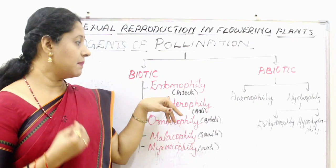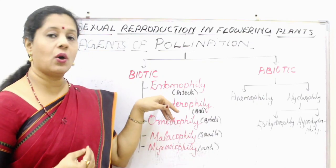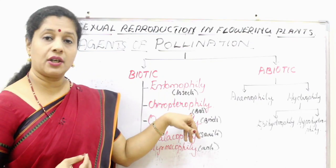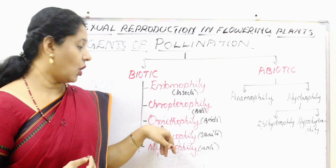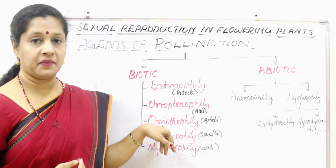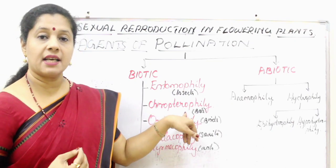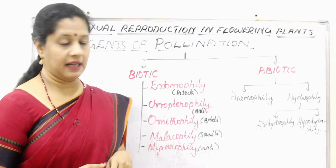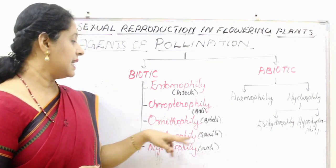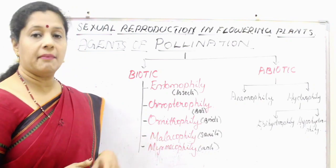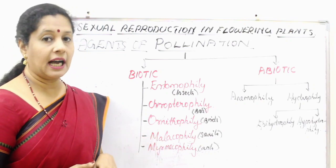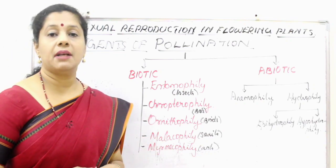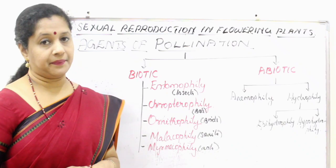Depending on which animal is involved, there are different names. If pollination is by insects, it is called entomophily. If birds are doing it, it is called ornithophily. If bats are doing it, it is called chiropterophily. By snails it is called malacophily, and pollination by ants is called myrmecophily.